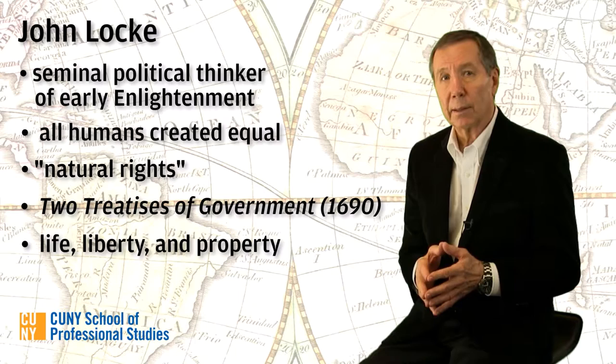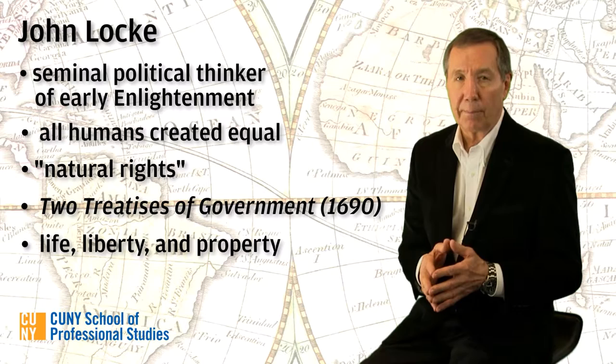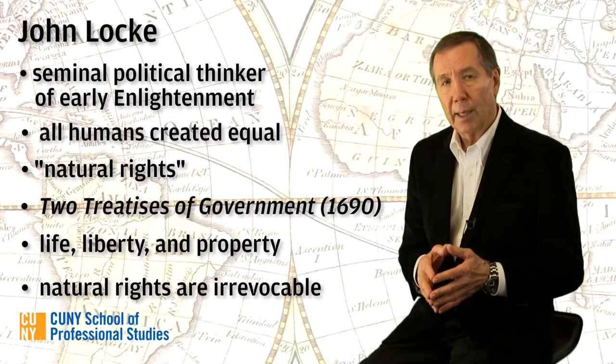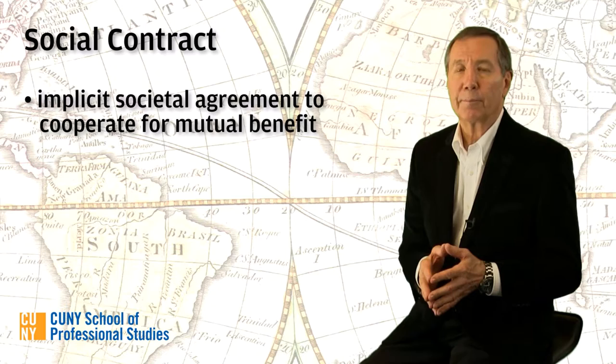The right to life means literally the right not to be killed. The right to liberty means the right to act as you wish, so long as you don't interfere with someone else's right to act as they wish. And finally, the right to property means the right to the fruits of your labor. Because these were natural rights, they originated with nature and were not conferred by a monarch — they could also not be taken away. As such, Locke argued that the government's responsibility was to protect its people's natural rights.